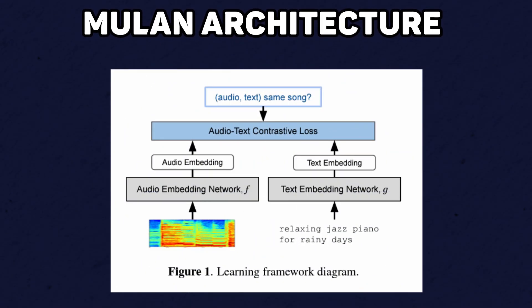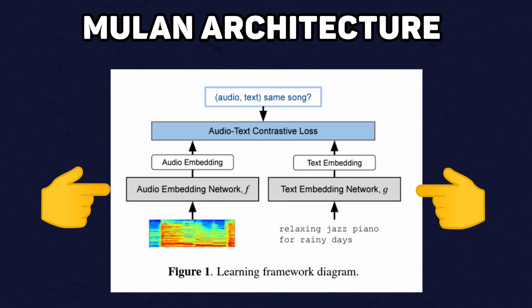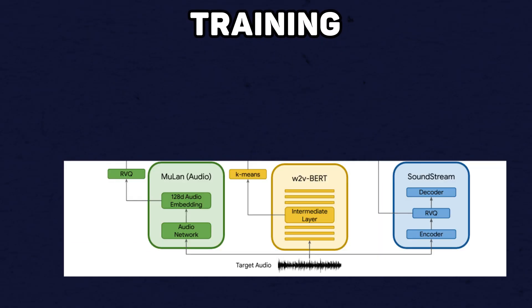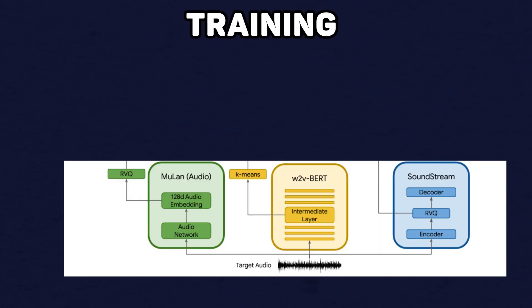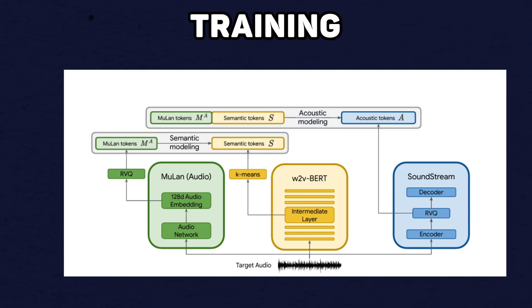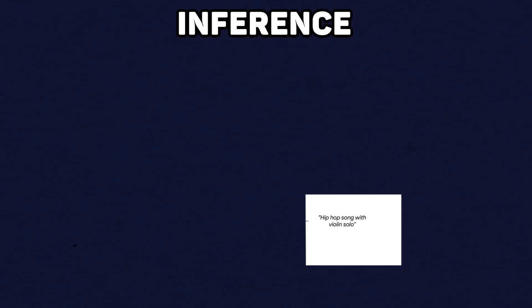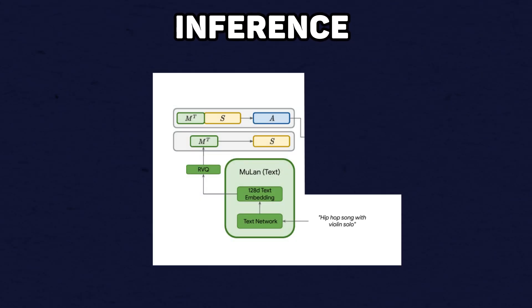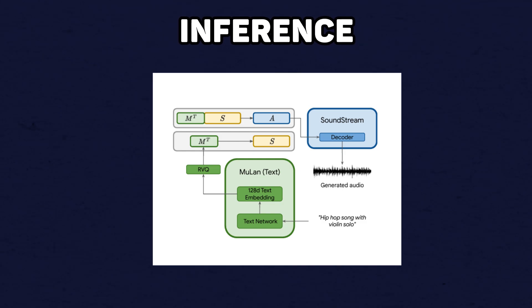Mulan itself is fascinating in that it's a joint audio-text embedding model, which allows it to generate a similar set of tokens for an audio clip and its associated text description. During training, audio is passed through three pre-trained models. Using the output tokens, two separate models are trained: a semantic model, which assists in preventing memorization, and an acoustic model, which generates acoustic tokens. Once trained, we can pass text to Mulan instead of audio and decode the resulting tokens through SoundStream's decoder to synthesize music.